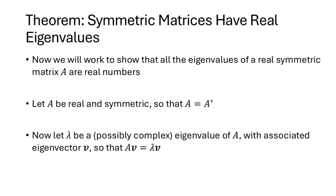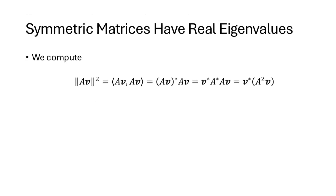Our first goal for the proof of the symmetric matrix theorem is to prove that a symmetric matrix has all real eigenvalues. Let A be an n by n real symmetric matrix; one consequence is that A equals its adjoint, A = A*. Let lambda be an eigenvalue for A — keep in mind that at this point lambda might be a complex number — and let v be an eigenvector associated with lambda, so that Av = lambda·v. We're going to compute the length of Av squared, which is the inner product of Av with itself, and by our definition of inner product that's (Av)* times Av.